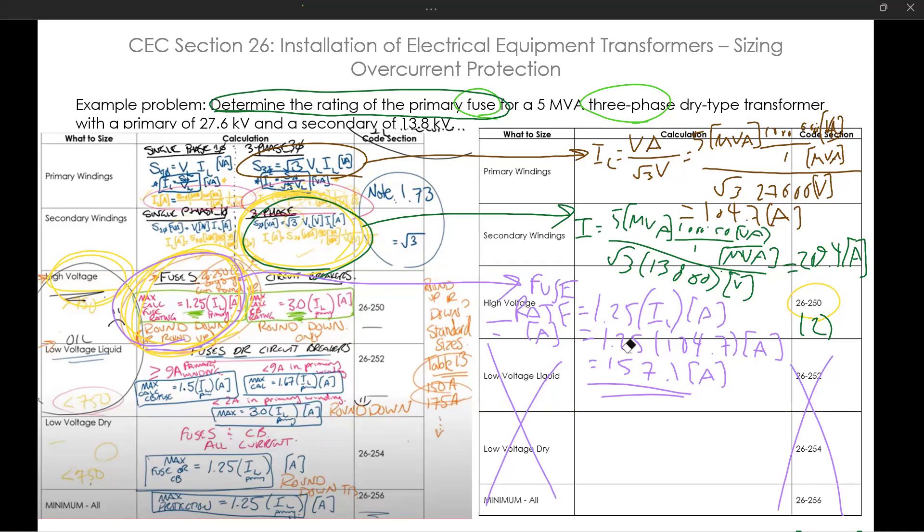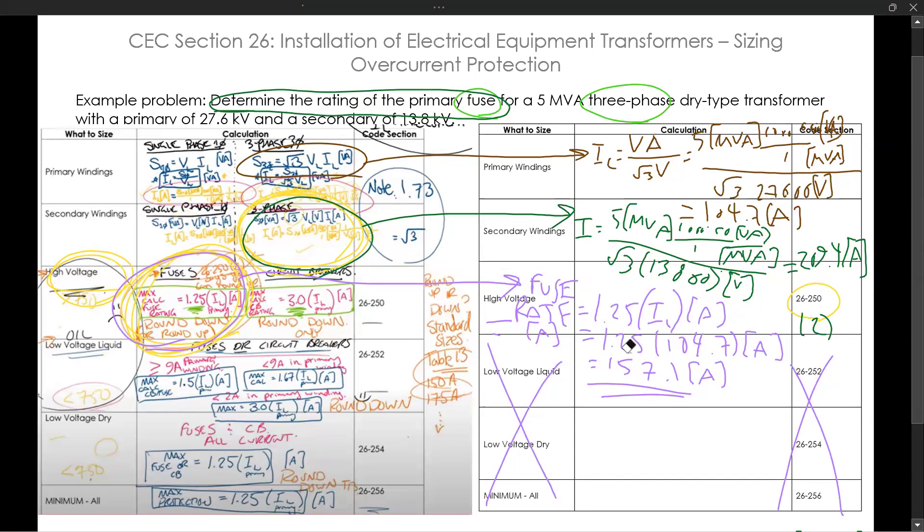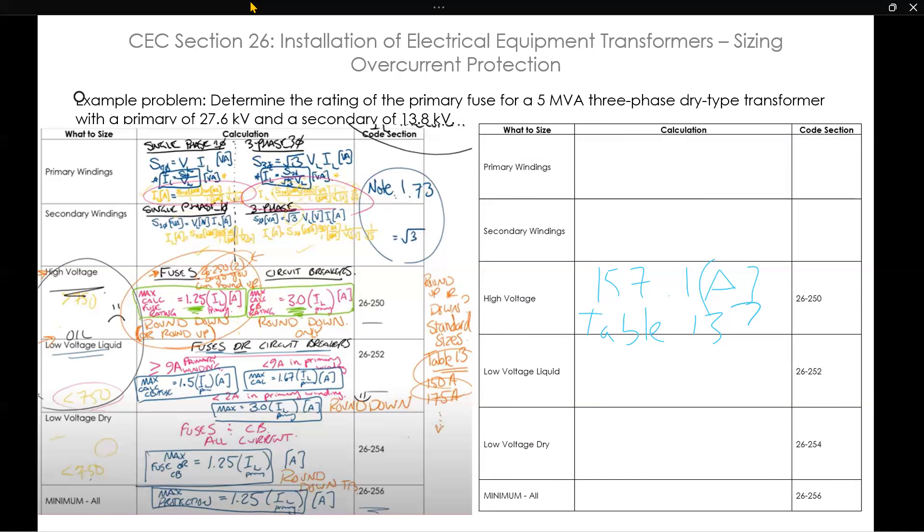Now let's think about what we do, because rule 26-250 subsection two says, you know what, you could round up if you want. But what are we really supposed to do? So in this case, there's kind of two answers. You can round up because subsection two says you're allowed to, or you can round down.